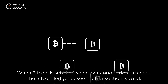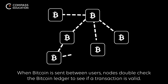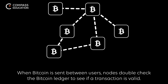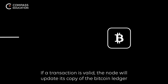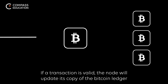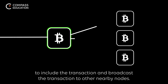When Bitcoin is sent between users, nodes double-check the Bitcoin ledger to see if a transaction is valid. If a transaction is valid, the node will update its copy of the Bitcoin ledger to include the transaction and broadcast the transaction to other nearby nodes.